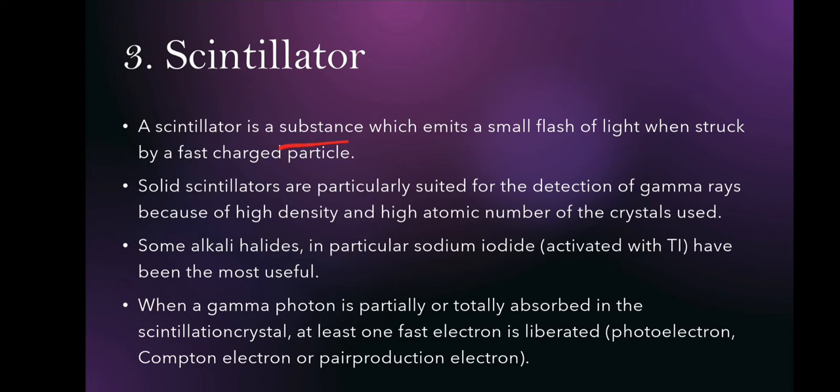A scintillator is a substance which emits a small flash of light when struck by a fast charged particle. So a scintillator is a substance that emits a flash of light when struck by a fast charged particle.